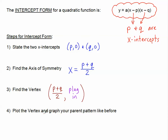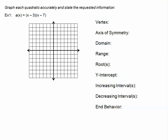Once we've done that, it's pretty simple: plot the vertex and graph the parent pattern just like before. Let's explore Example 1. We have a(x) equals (x minus 3) times (x minus 7). Because I see two sets of parentheses, I know this is intercept form. So I should find my two x-intercepts. The first comes from the first parenthesis — it's 3, because x minus 3 equals 0 when x is 3. The other one is 7. Let's plot those: 3 and 7 on the x-axis.